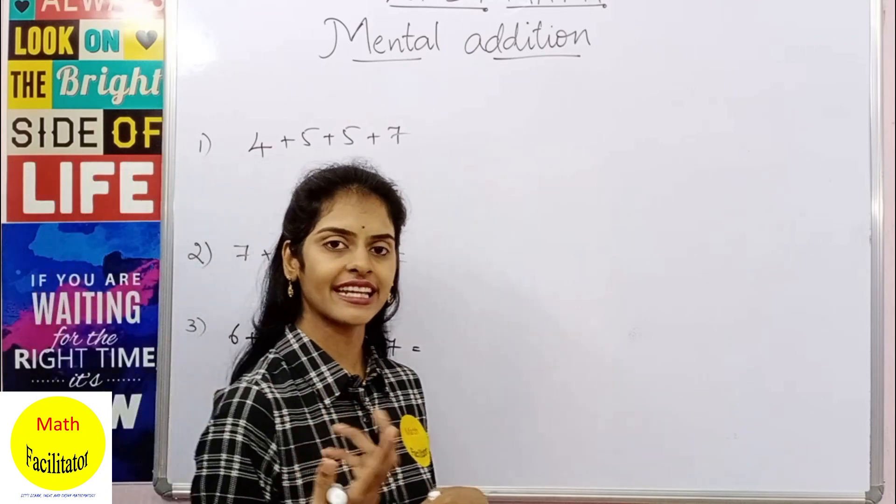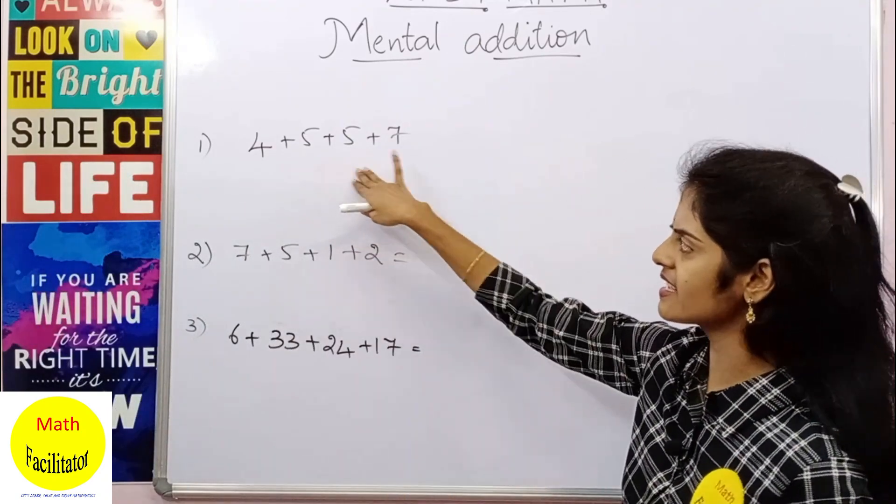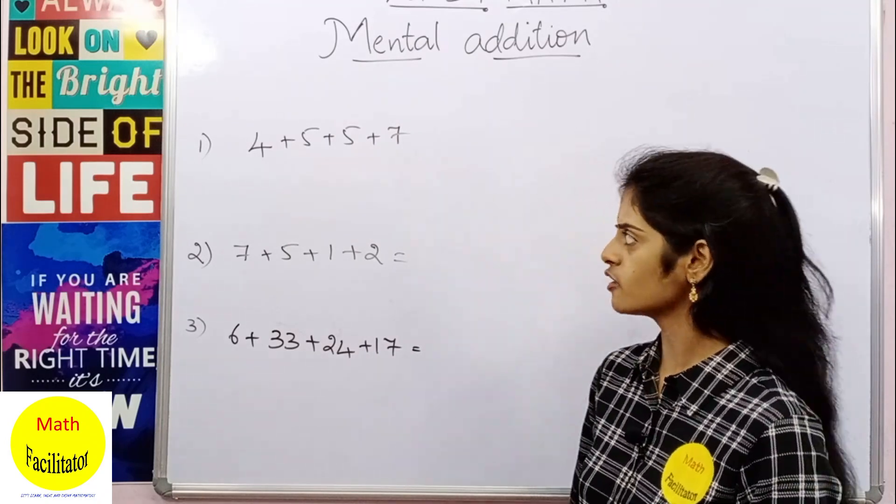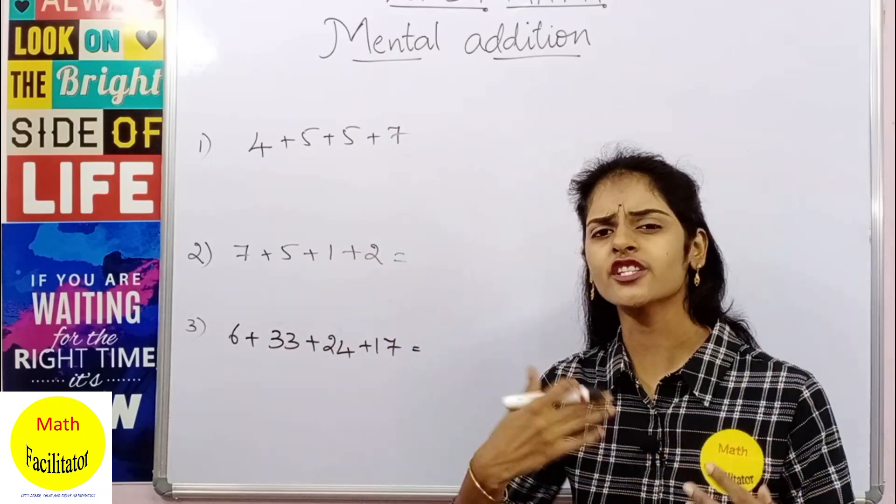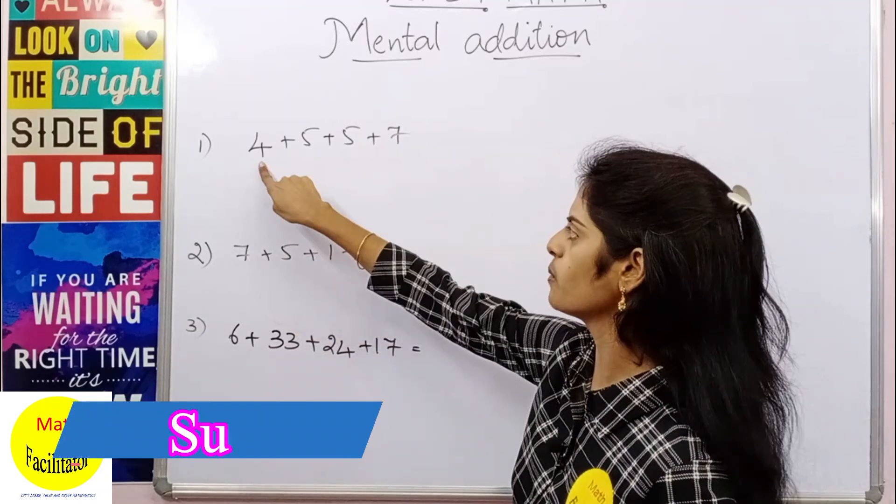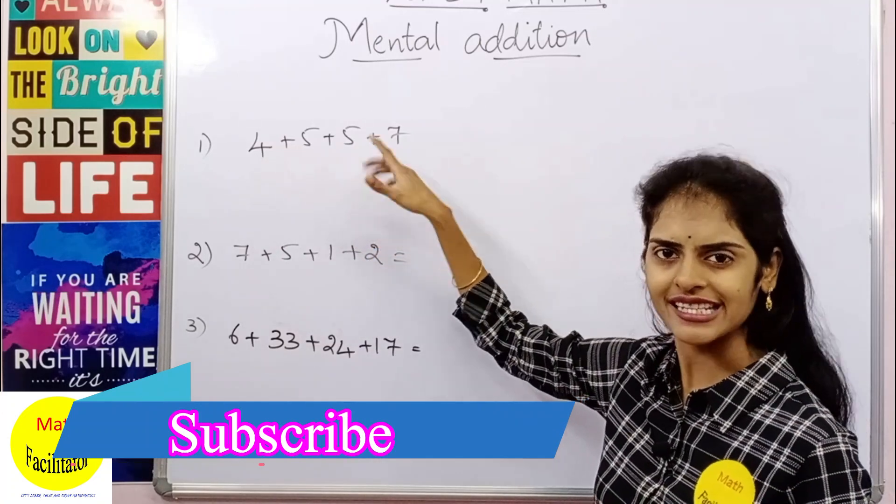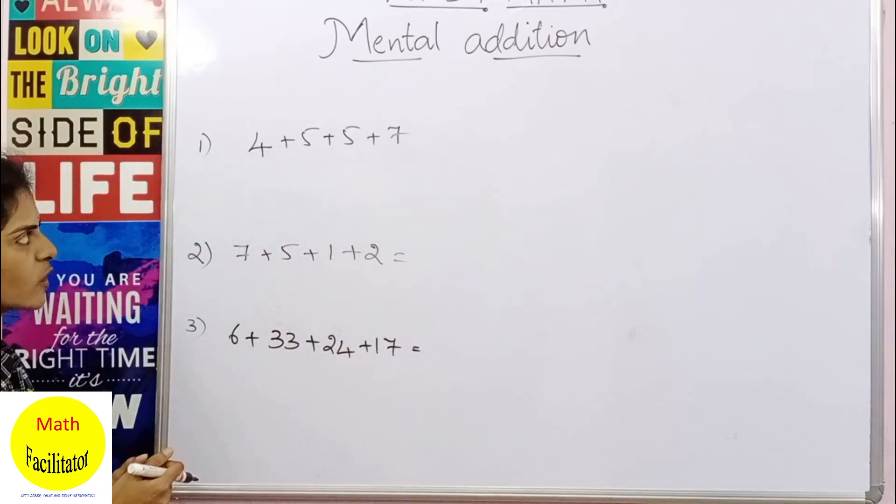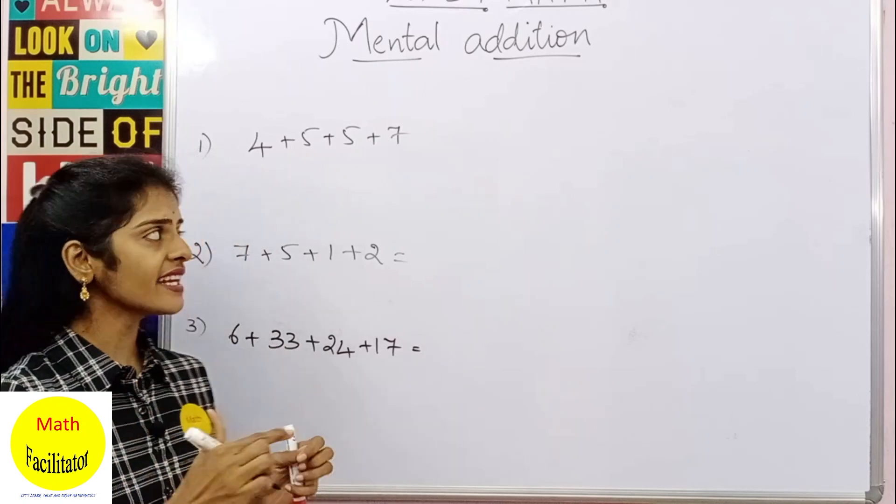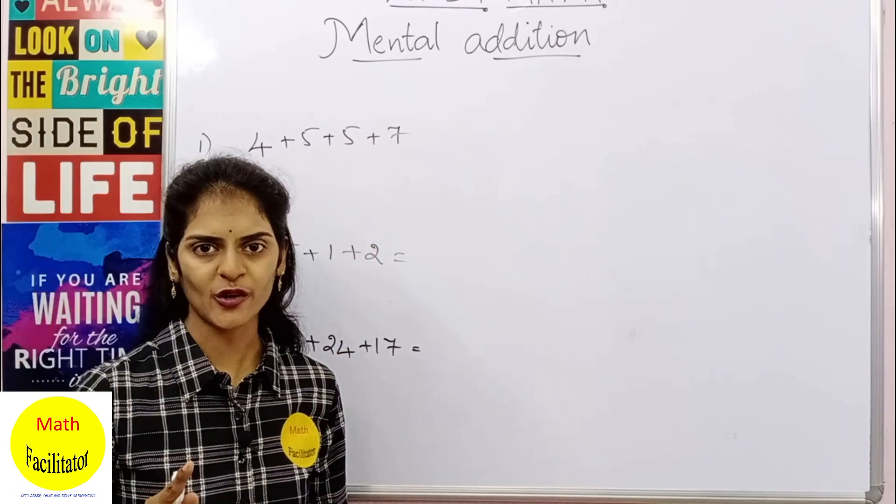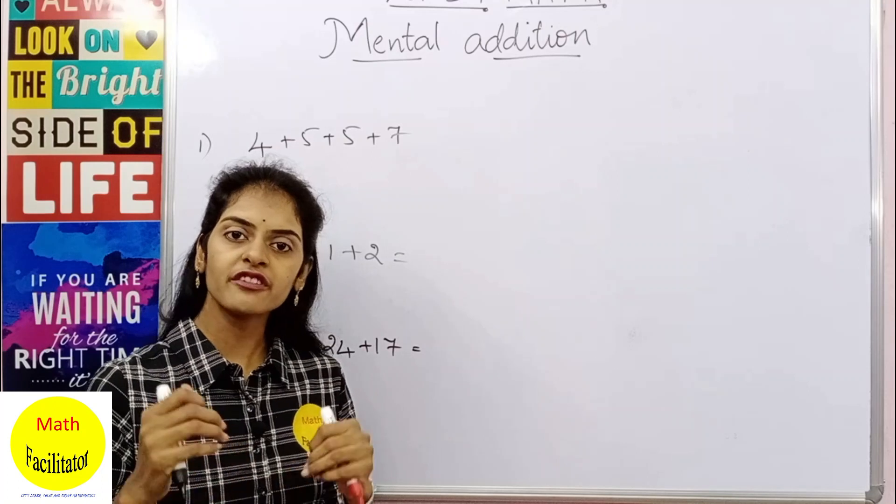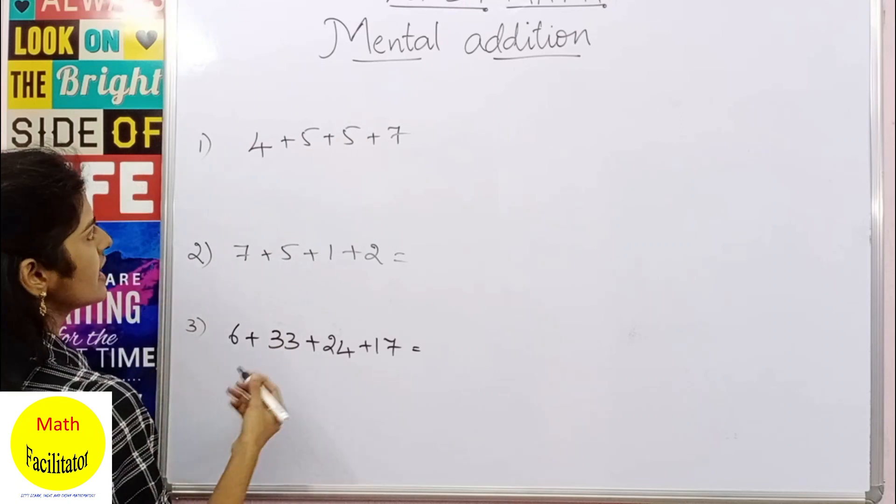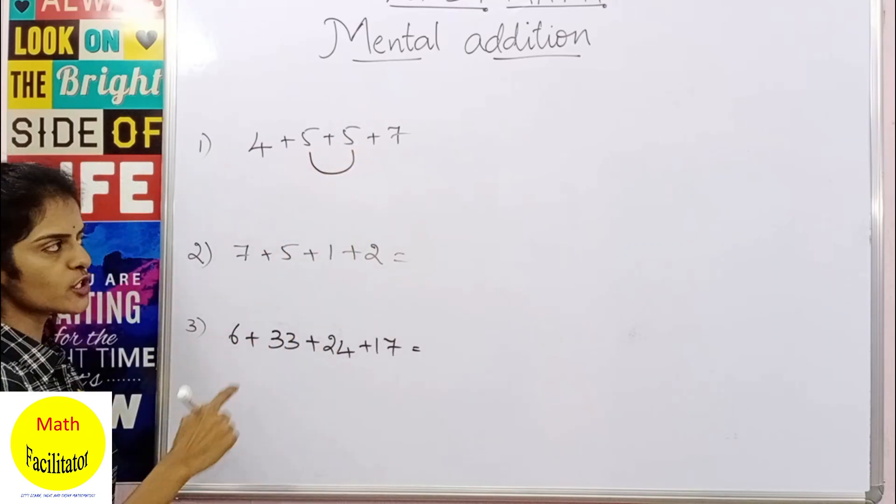The next method is nothing but completing in whole. You might have come across these additions very frequently in your calculations whenever you do problems. Now you might be adding 4 plus 5 is 9, 9 plus 5 is 14 in this way, right? So let me tell you an easier method to do this. In this method we shall find out are any of the numbers making 10. Completing the whole is nothing but we'll try to find out if the numbers are making 10. Whole is nothing but 10.